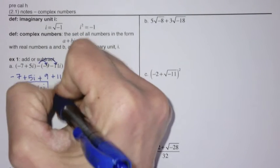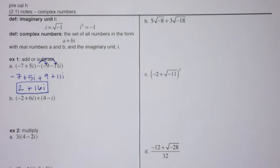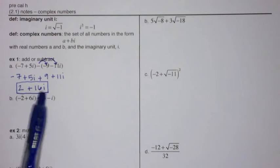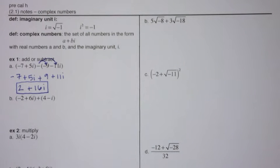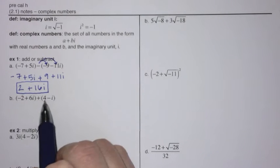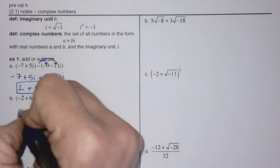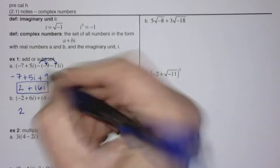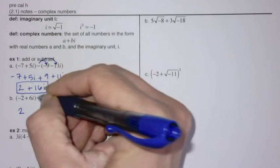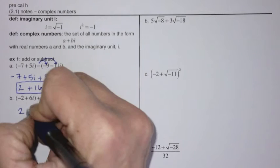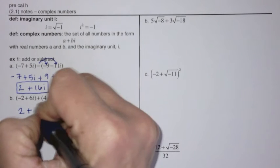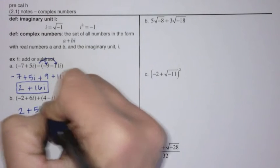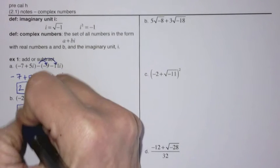Notice I didn't write it as 16i plus 2 — that's because standard form is to write the real number first, then the imaginary unit. The next one: negative 2 and 4 makes 2, and 6i plus negative i makes 5i, so we can do that one quickly.